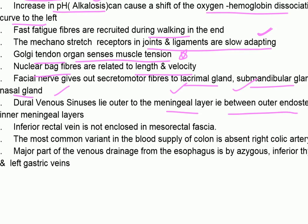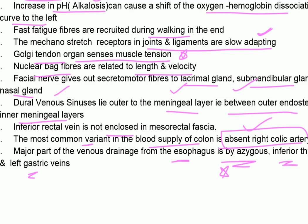The inferior rectal vein is not enclosed in the viscerorectal fascia. The most common variant in the blood supply of the colon is an absent right colic artery. The major part of venous drainage from the esophagus is by the azygos vein, inferior thyroid, and left gastric veins.